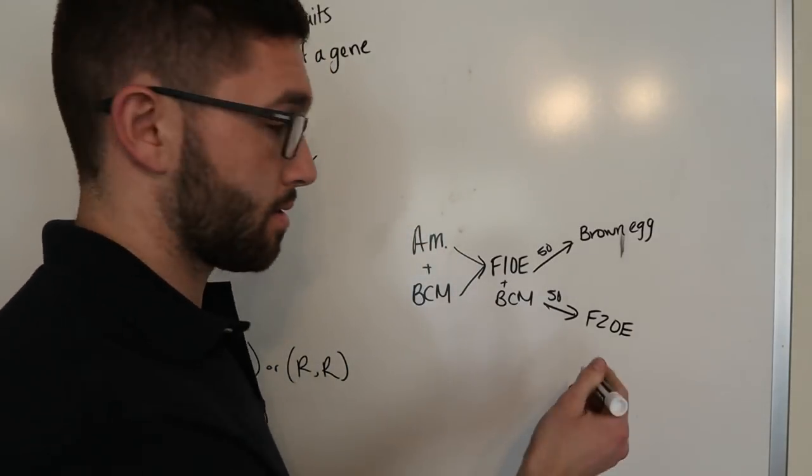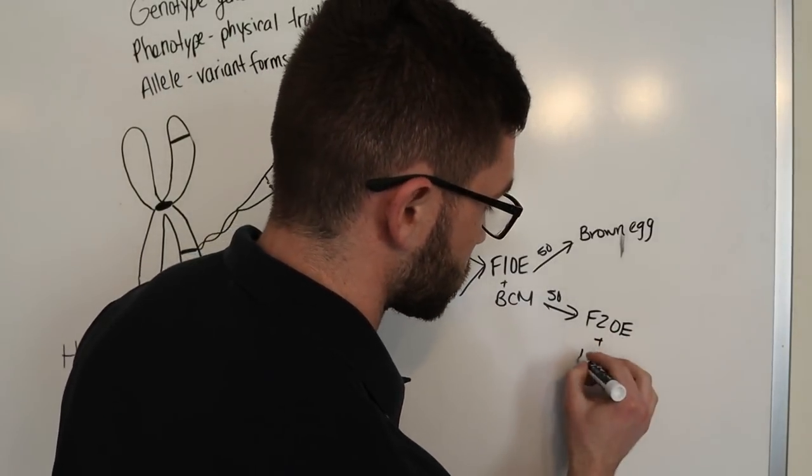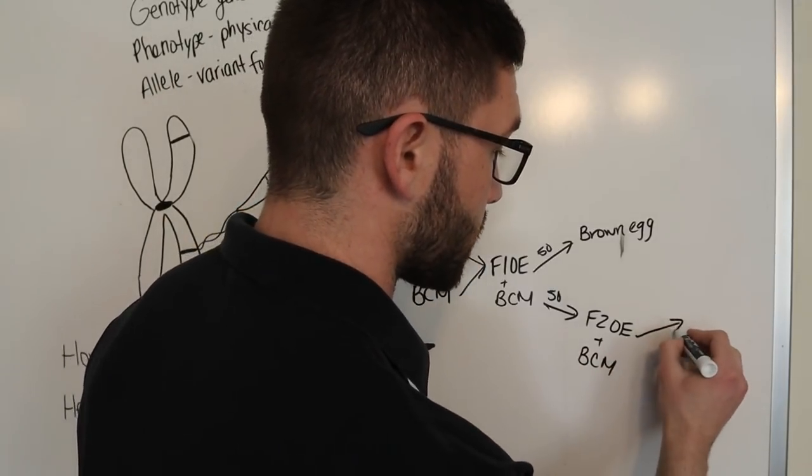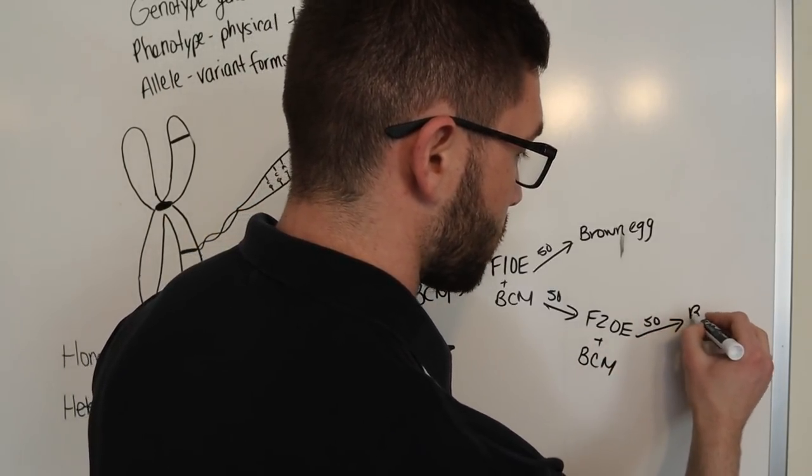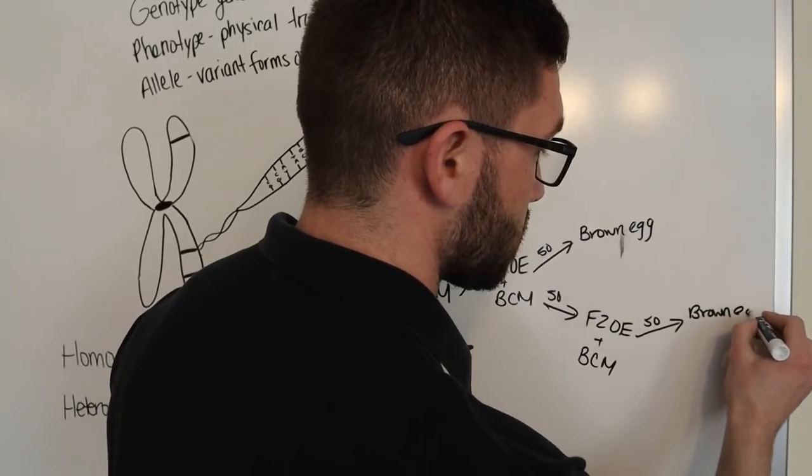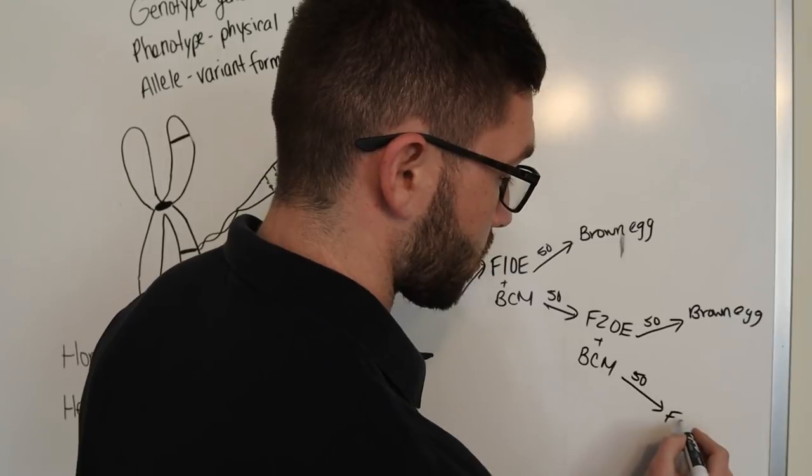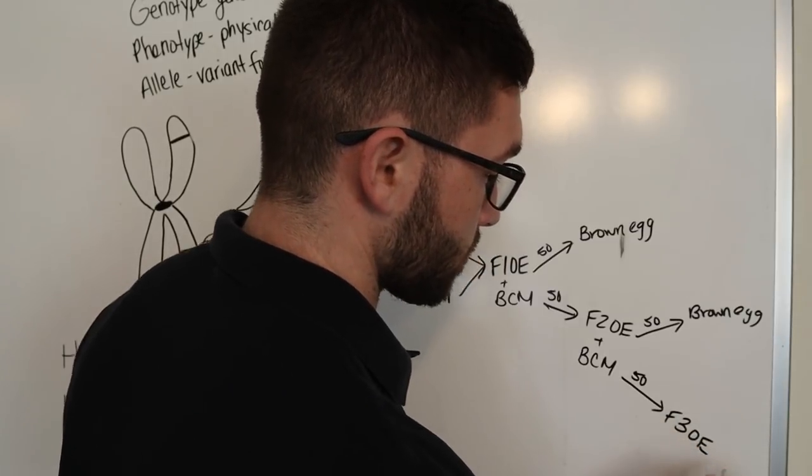And if you back cross them again with, say, another Black Copper Maran, because you want a dark olive egg, 50% will again be brown egg layers, while the other 50% will be third generation olive eggers. And so, I actually brought some eggs to show you.